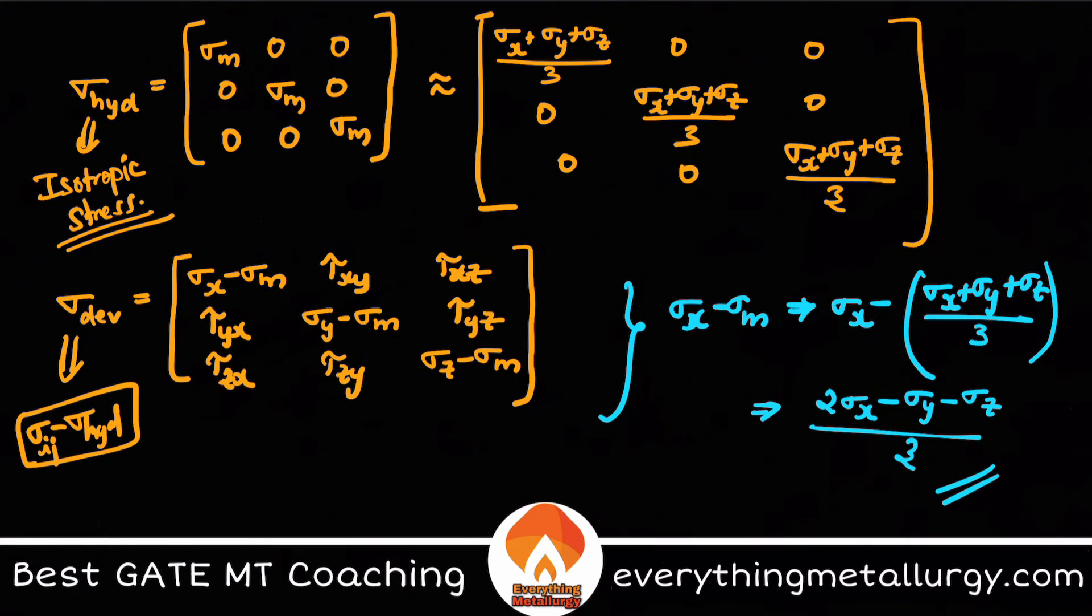Similarly, in the same manner you can always do for the other components which are sigma y minus sigma m and sigma z minus sigma m. This is basically how you got the split of the stress components into two parts.